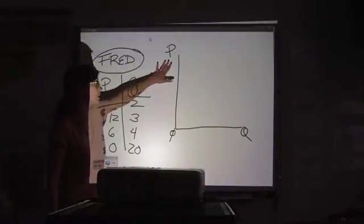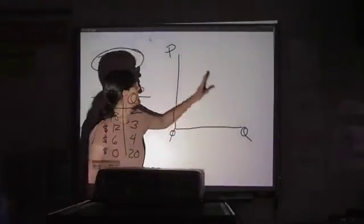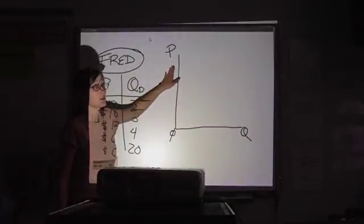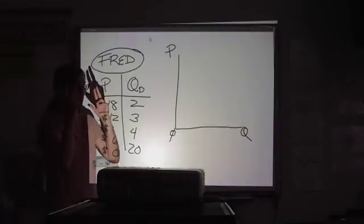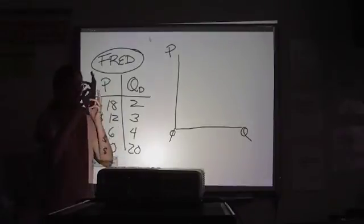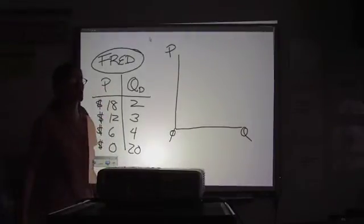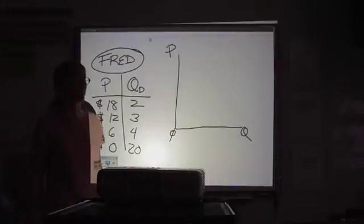Price is your independent variable. The quantity depends on the price. You can't work this the other way around, or your analysis will get very confused. Wrong is another good word for that.